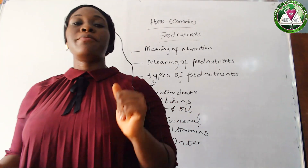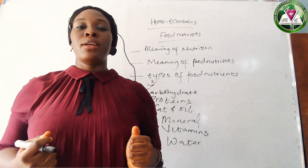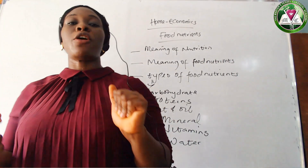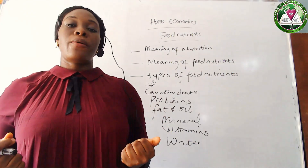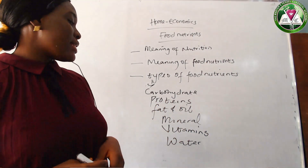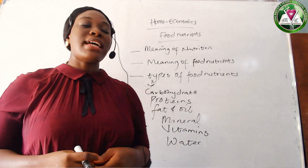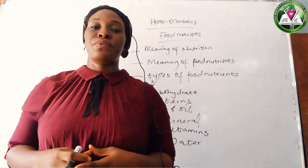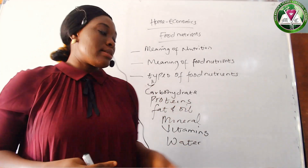Vitamins are also a protective food that helps you to fight infections. The sources of vitamins include fruits such as pineapple, orange, and carrots. The last nutrient is water. Water is needed for digestion and water absorption. Sources include your normal water and beverages.